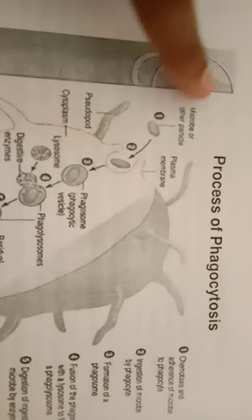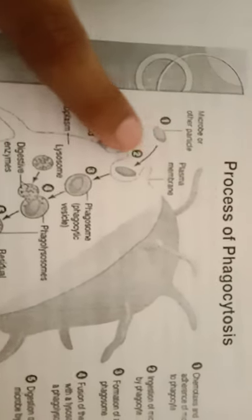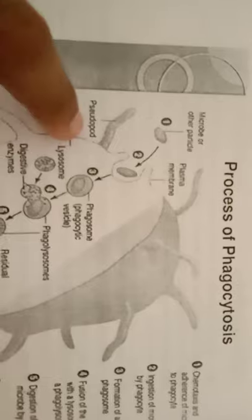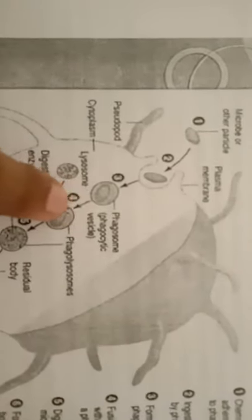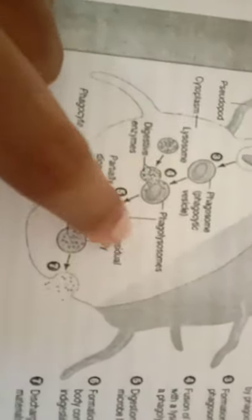The phagocytic cell engulfs the microparticle. The plasma membrane extends pseudopodal cytoplasm to engulf the microorganism. The phagosome forms and fuses with a lysosome to create a phagolysosome. The material is digested within the phagolysosome, and the residual body containing indigestible material is eventually broken down and excreted.